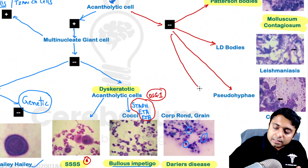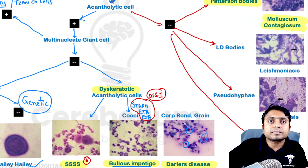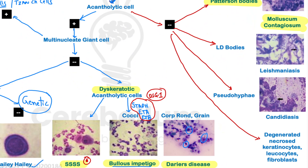One last diagnosis to remember: degenerated necrotic keratinocytes, leukocytes, and fibroblasts are seen. The patient has a history of drug intake after which there are constitutional symptoms — fever, tenderness and erythema over the body, bullous lesions, and finally sheet-like epidermal peeling involving more than 30% of the body surface area. The diagnosis is toxic epidermal necrolysis (TEN). These are all the conditions to remember associated with the Tzanck smear and its findings.